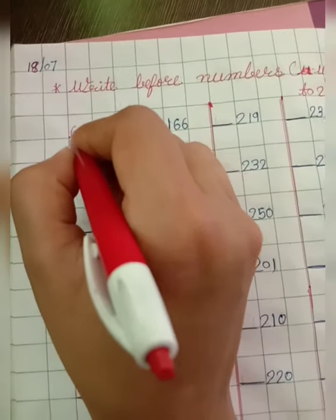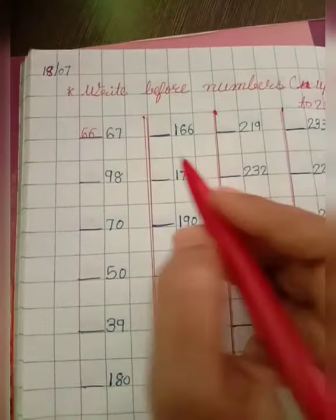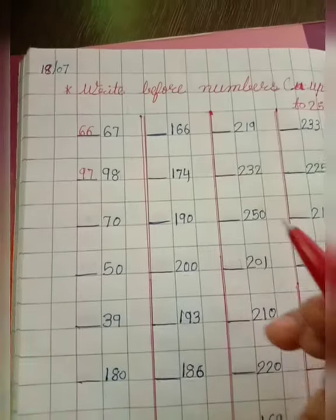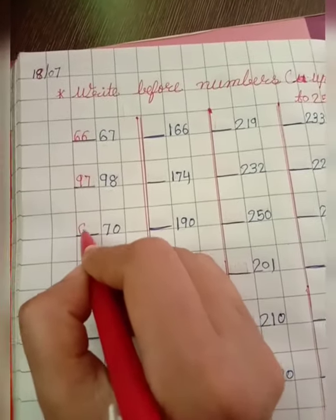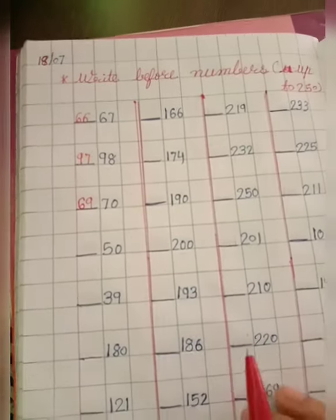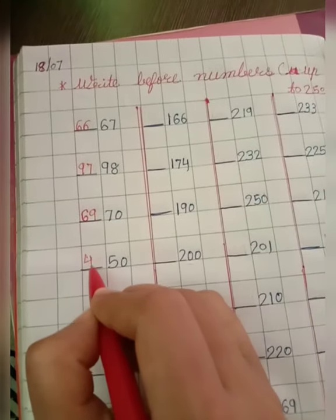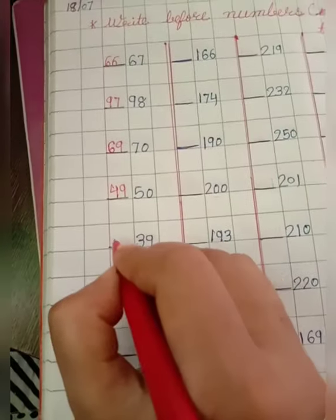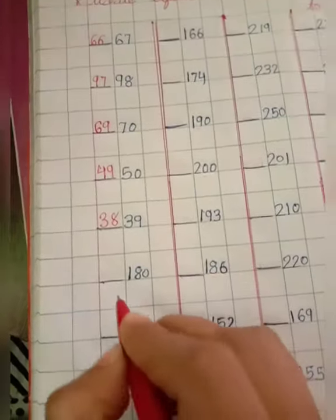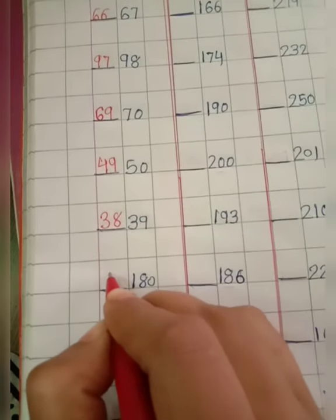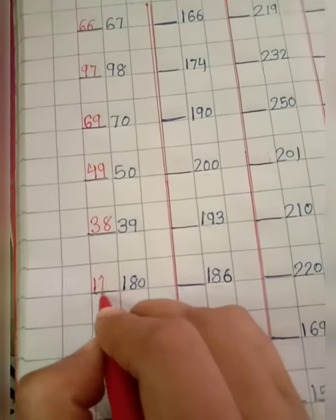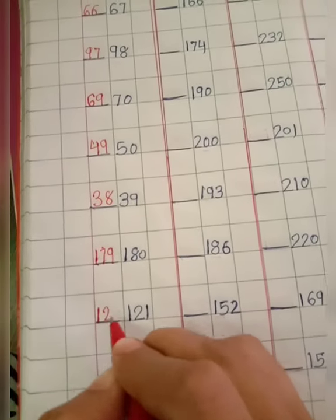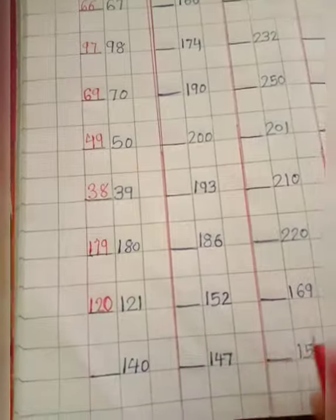67, so 67 before 66. 98, so 98 before 97. 70, 70 before 69. 50, 50 before 49. 39, so 39 before 38. 180, so 180 before 179. 120, so 120, 1 before 120.